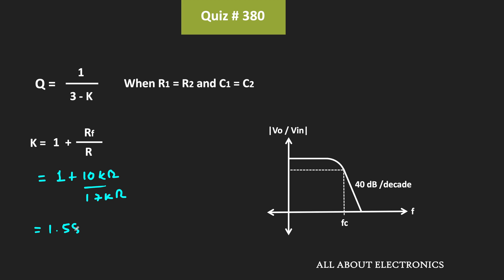This will be the passband gain of this filter. In dB, it equals 20 log(1.58), which equals 4. So in the passband, the gain of this filter is 4 dB.